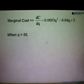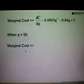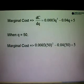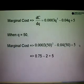So when q is equals to 50 then the marginal cost is obtained by substituting q equals to 50 into the marginal cost function here. So we will get 0.0003q square minus 0.04q plus 5. So simplify.